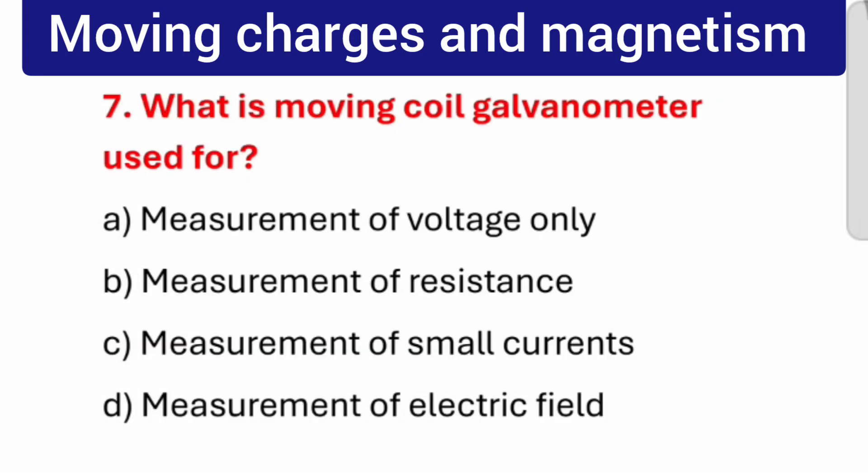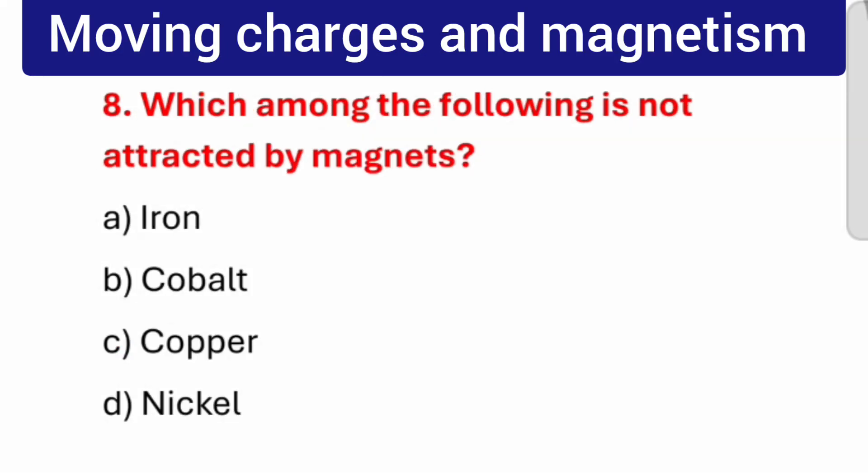Question number 7: What is moving coil galvanometer used for? The correct answer is measurement of small currents. Question number 8: Which among the following is not attracted by magnets? The correct answer is Copper.